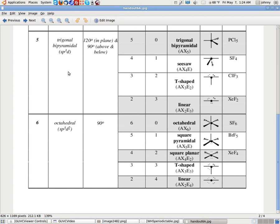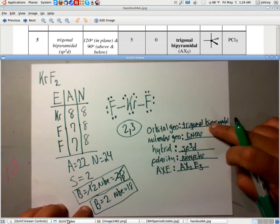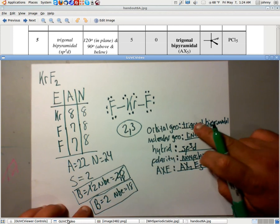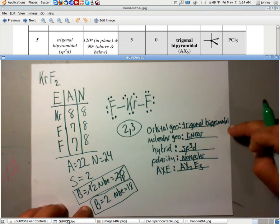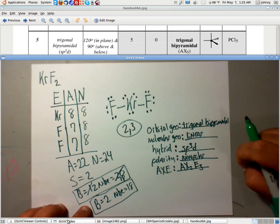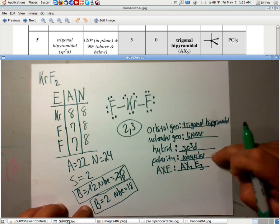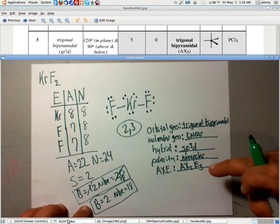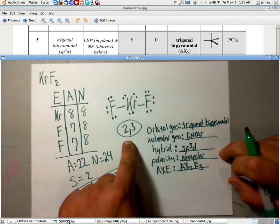Oh, and good luck spelling that one too. But anyway, we've got it all on here. I even misspelled that one. Trigonal bipyramidal and I was even looking at it. Orbital geometry is trigonal bipyramidal. Molecular geometry is linear. Hybridization SP3D. Polarity nonpolar. And AXE notation AX2E3. That's where the molecular number comes in handy.